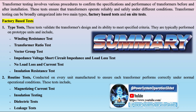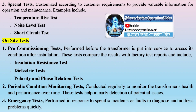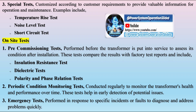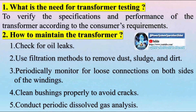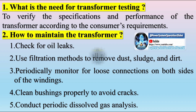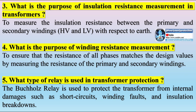Q&A: What is the need for transformer testing? — To verify the specifications and performance of the transformer according to the consumer's requirements. How to maintain the transformer? — Check for oil leaks; use filtration methods to remove dust, sludge, and dirt; periodically monitor for loose connections on both sides of the windings; clean bushings properly to avoid cracks; and conduct periodic dissolved gas analysis. What is the purpose of insulation resistance measurement? — To measure the insulation resistance between the primary and secondary windings (HV and LV) with respect to earth. What is the purpose of winding resistance measurement? — To ensure that the resistance of all phases matches the design values by measuring the resistance of the primary and secondary windings. What type of relay is used in transformer protection? — The Buchholz relay, used to protect the transformer from internal damages such as short circuits, winding faults, and insulation breakdowns.